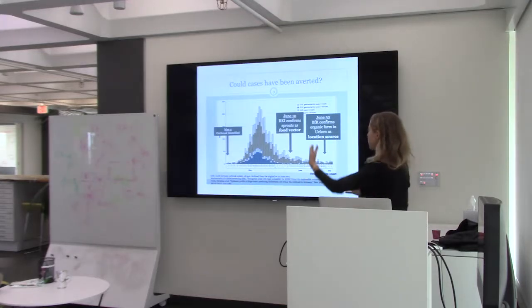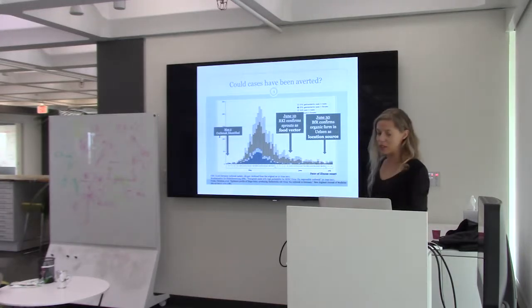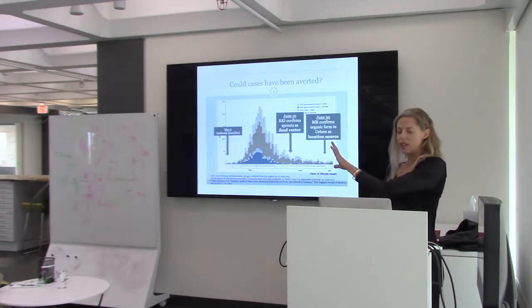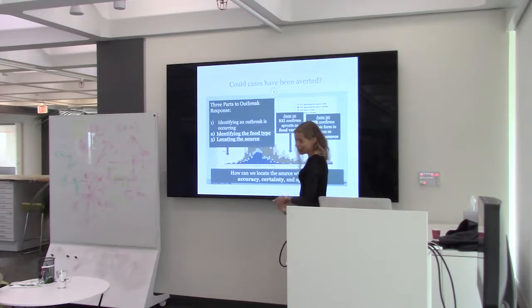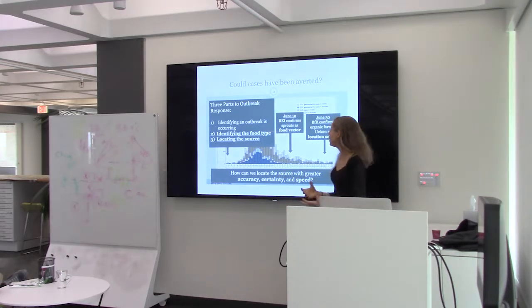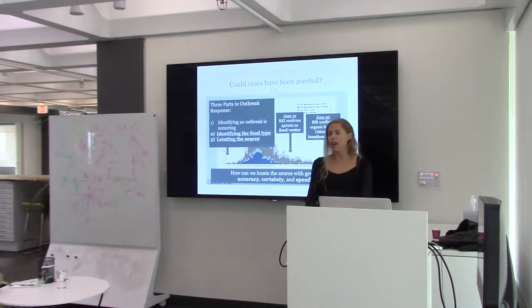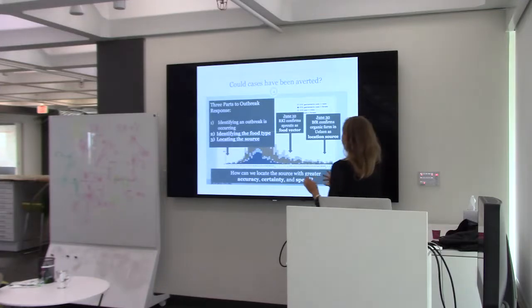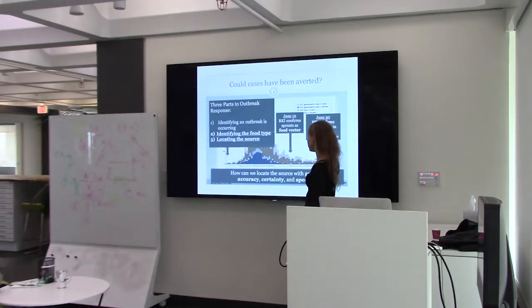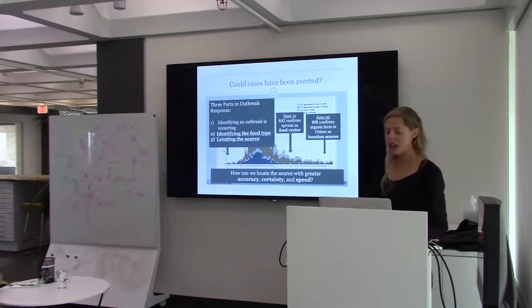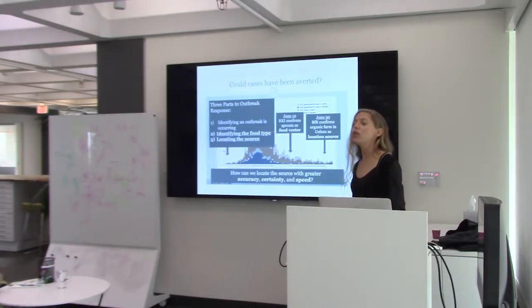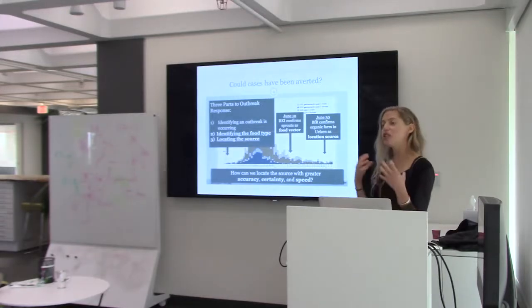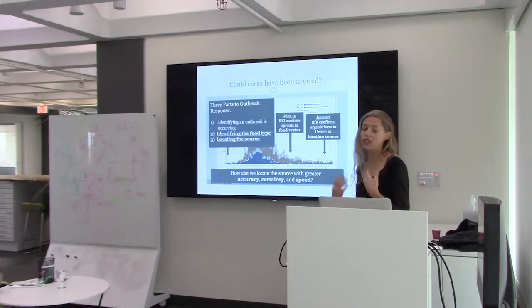There's a huge lag between awareness and identification, and that's the gap we want to close. When there's a foodborne disease outbreak, there are really three parts of the response process: detecting the outbreak, identifying the food vector source of the outbreak, and identifying the location of the source. Those are the two parts of the problem I'm focusing on today — the food vector and the location source. How can we do this faster and more accurately using data that is currently available, and develop improvements that can be contributed to the regulatory food safety investigation process?